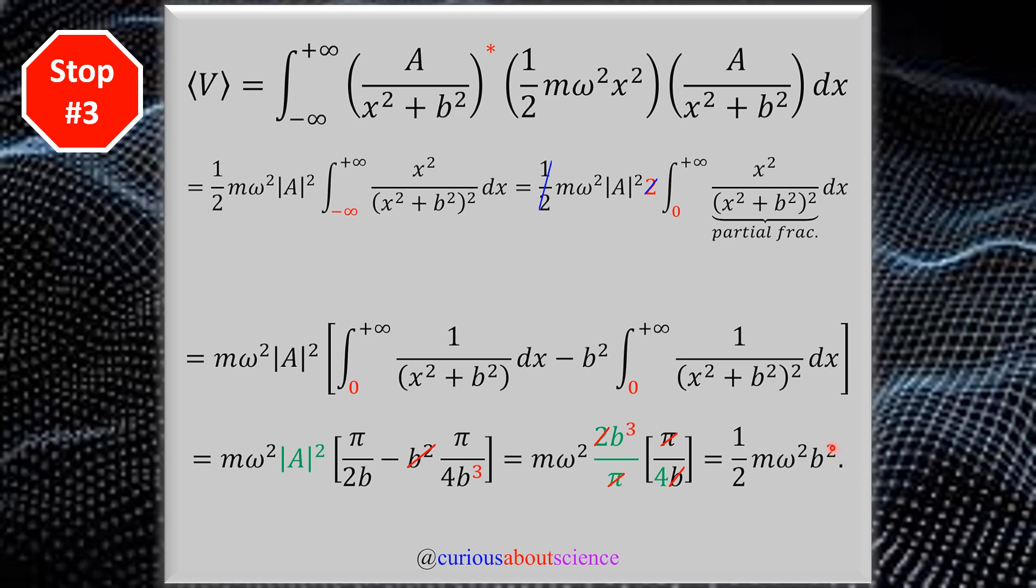π and π cancel, no negative signs to worry about, and we're left with (1/2)mω²b². That's pretty cool, the x² gets reduced to a b² in this case. I was not expecting that but that's pretty cool to see. So what we have to do now, we have the kinetic and we have the potential. Let's combine them to the total Hamiltonian.